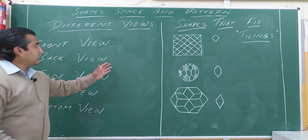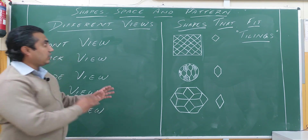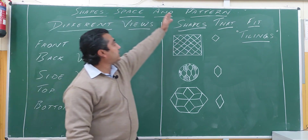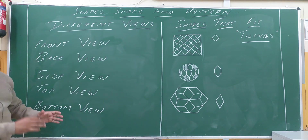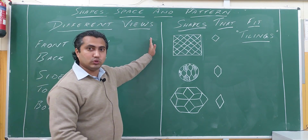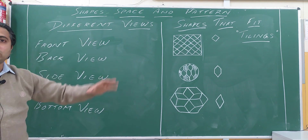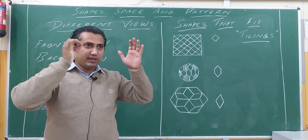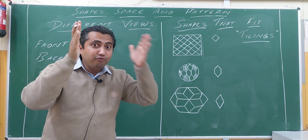Hello students. Here we are with almost the last part of this chapter, that is Shapes, Space and Pattern. We will be discussing two things, and let us stick to the first one — that is different views. Views means the view or sight that we are having, that is called a view.